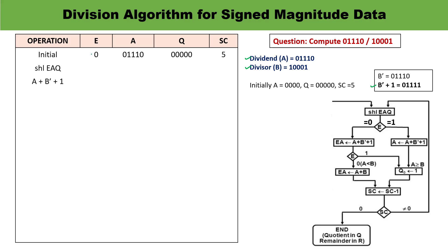Initially, E is 0 because the content of E is cleared. A is 01110, Q is 000, and the sequence counter is 5.